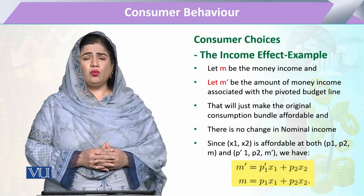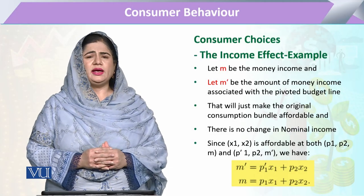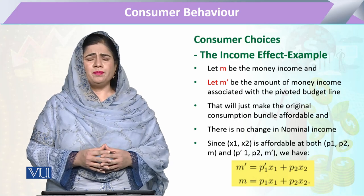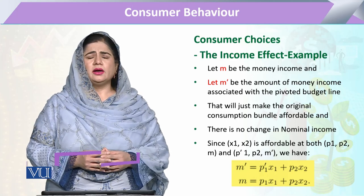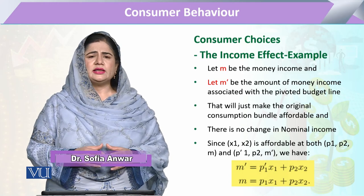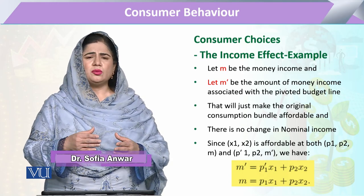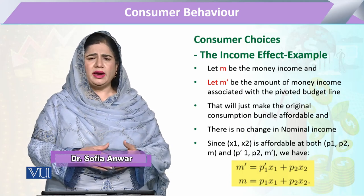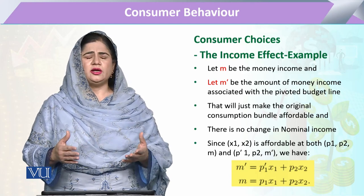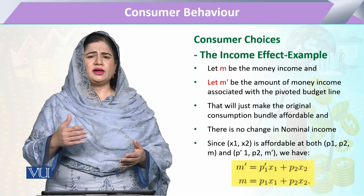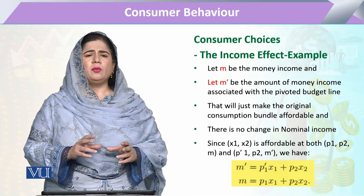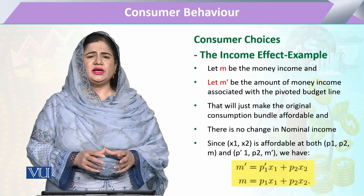In this module, we will explain one example and through that example we will learn how, with the change in the price of a commodity, the change in the commodity's demand is bifurcated into two parts: substitution effect and income effect.